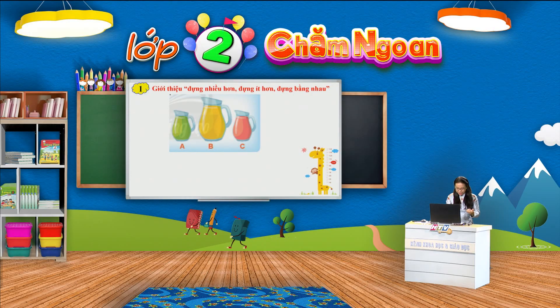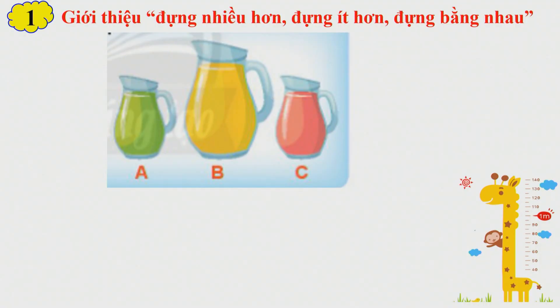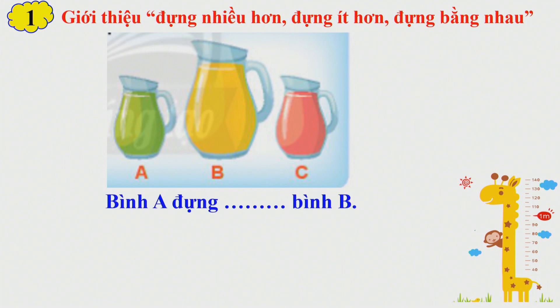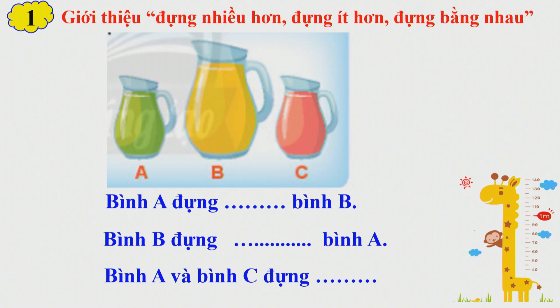Qua phần dự đoán vừa rồi, các em đã được làm quen với đựng nhiều hơn, đựng ít hơn, đựng bằng nhau. Các em hãy quan sát trên màn hình. Cô giới thiệu đây là 3 bình để đựng nước. Các em thấy 3 bình này đều có hình dạng giống nhau, chỉ khác nhau ở độ lớn thôi. Các em sử dụng các từ nhiều hơn, ít hơn, bằng nhau để hoàn thiện 3 câu: Bình A đựng thế nào so với bình B? Bình B đựng thế nào so với bình A? Và bình A và bình C đựng thế nào?